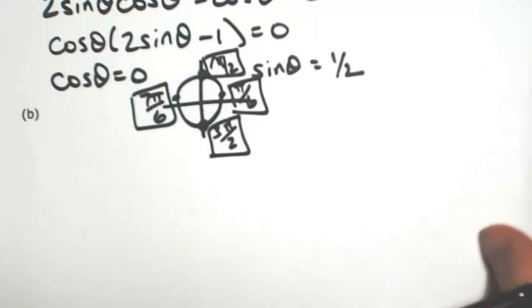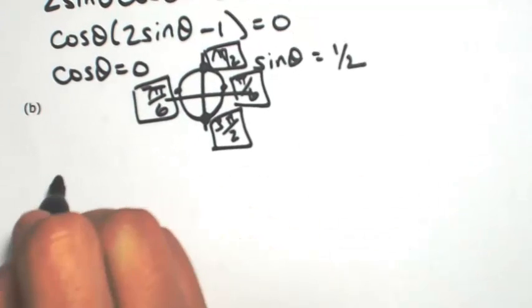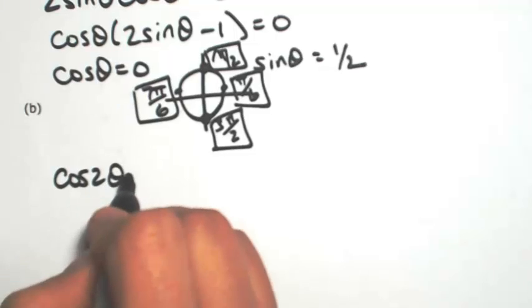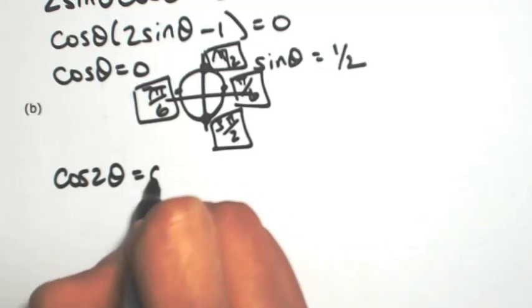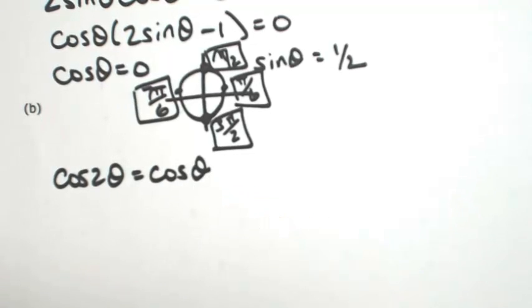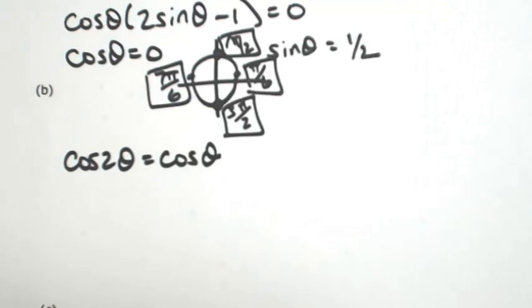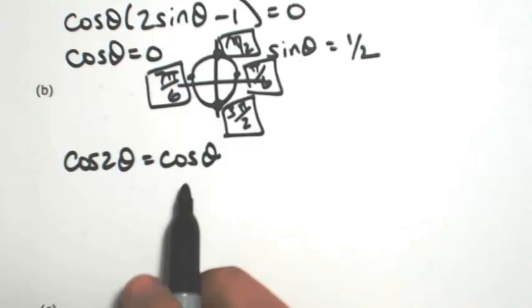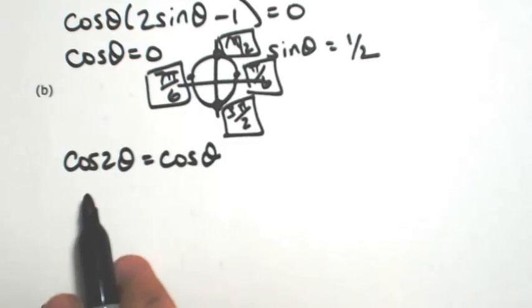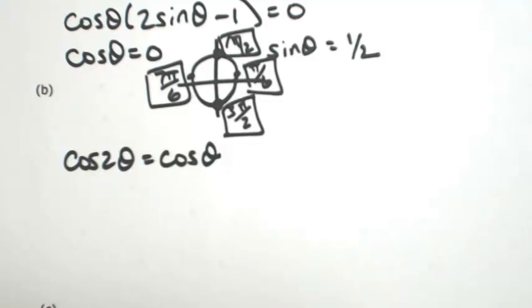Let's look at another one. Let's say this time it's cos2θ and this equals cosθ. So again, expanding this out, this time we have a cosine, so we have three options. Because the right side is cosine, I'm going to use the one involving just cosine. So that's going to be 2cos²θ - 1.